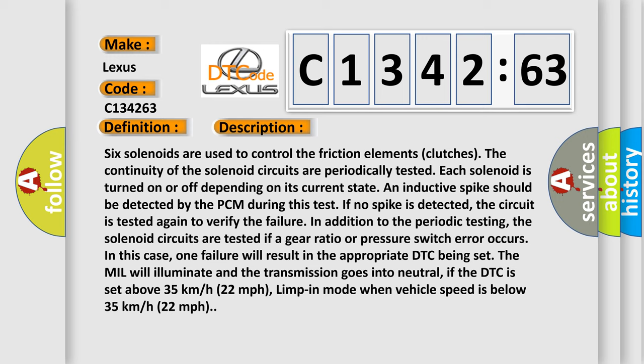Six solenoids are used to control the friction elements clutches. The continuity of the solenoid circuits are periodically tested. Each solenoid is turned on or off depending on its current state. An inductive spike should be detected by the PCM during this test. If no spike is detected,